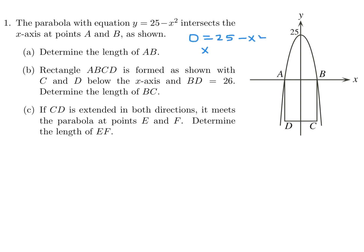Solve for that, you get x squared is equal to 25. x is therefore equal to plus or minus 5. So B looks like 5, and this is minus 5. The distance from minus 5 to 5 is 10. So that would be the answer to part A.